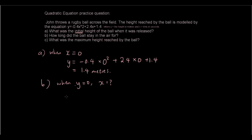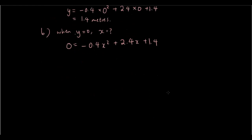Okay, so let's solve the equation. The equation is 0 equals negative 0.4x squared plus 2.4x plus 1.4. And unfortunately it's not easily factorized so we'll have to use the quadratic equation. So the quadratic equation states that x is equal to negative b plus minus square root of b squared minus 4ac over 2a.